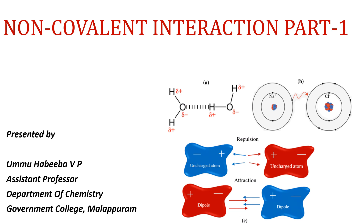Hello my dear students. In the last class we have already discussed about supermolecules. Supermolecule is used to describe supramolecular assemblies which are complexes of two or more molecules that are not covalently bonded. That is, non-covalent interaction is seen in supermolecules.